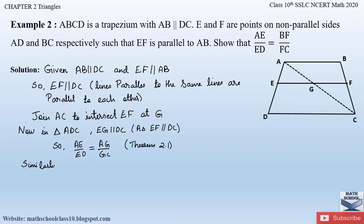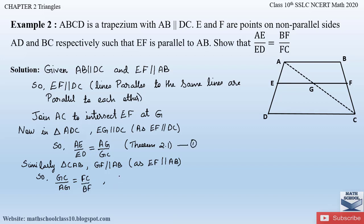Similarly, consider triangle CAB. Here GF intersects two sides of triangle CAB, that is BC and AC, and it is parallel to the third side AB. So we can apply Theorem 2.1 again. Since GF is parallel to AB, as EF is parallel to AB, we write: GC divided by AG is equal to FC divided by BF — by Theorem 2.1.